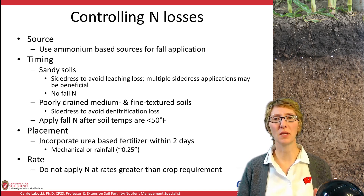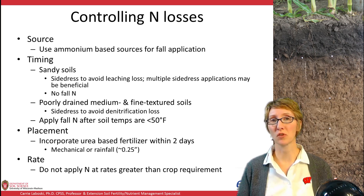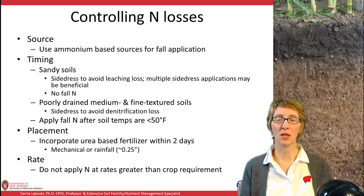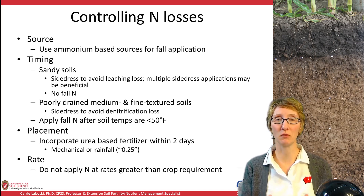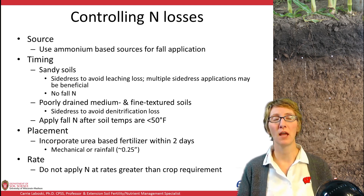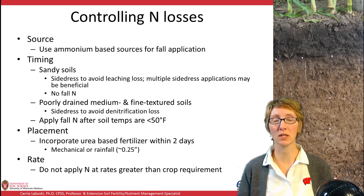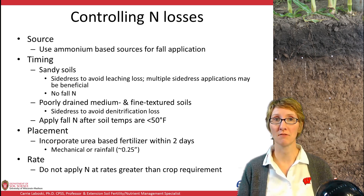In our poorly drained medium and fine textured soils, we might want to consider side dressing as our main option to avoid some of the denitrification and leaching losses that may occur earlier in the spring when we have heavier rainfalls. With fall application for any source of nitrogen or manure, we really want to be putting on ammonium N in the fall and wait until soil temps are less than 50 degrees. We can still have nitrification occurring at lower soil temperatures below 50, so let's at least wait until we're at soil temps less than 50 in the fall.